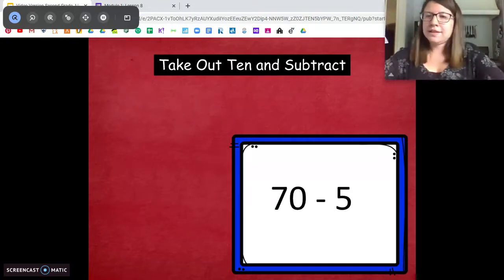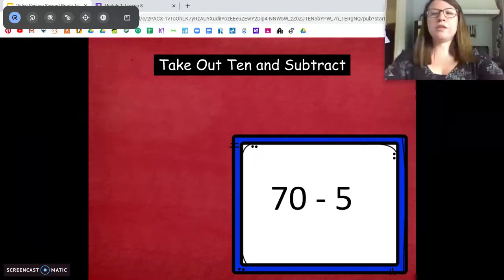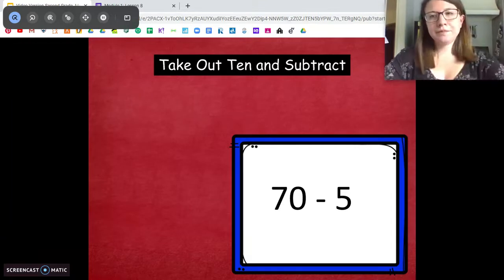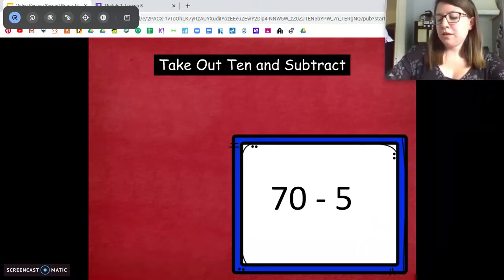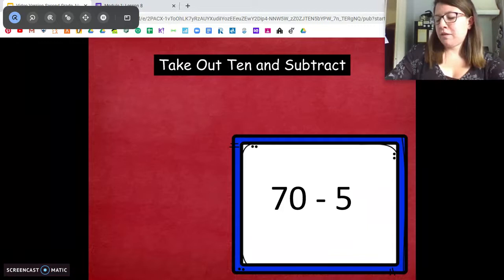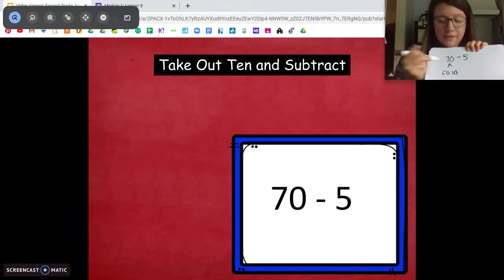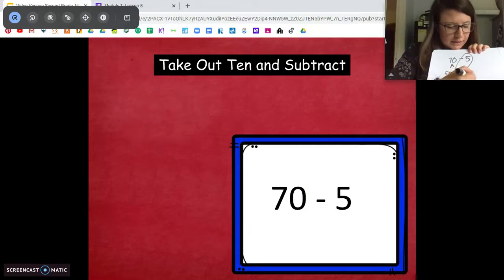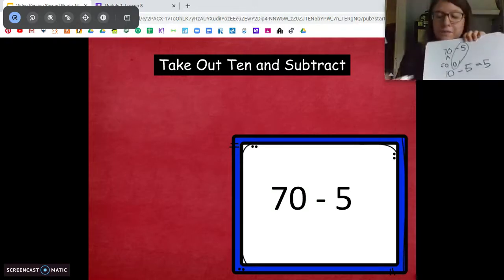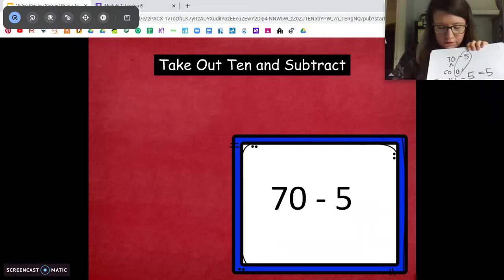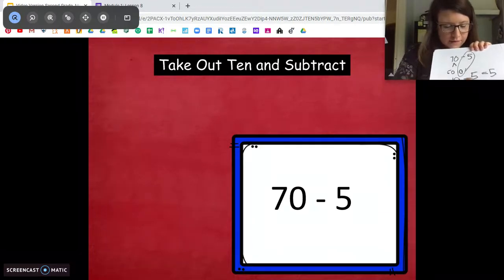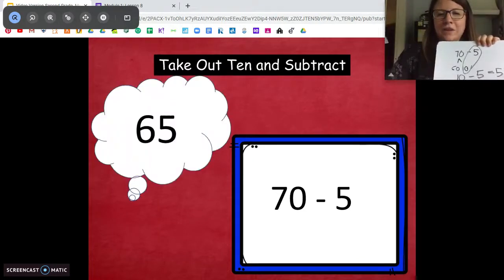Try this one. 70 minus 5. Go ahead and pause and do it on your own. Ready? 70 minus 5. We break apart the 70 to a group of 10 and our other part is going to be 60. 60 plus 10 equals 70. Then we're going to take our 10s fact. 10 minus 5 equals 5. And we have to add in our extra 10s, equals 65. A little sloppy, but you got it. Good.